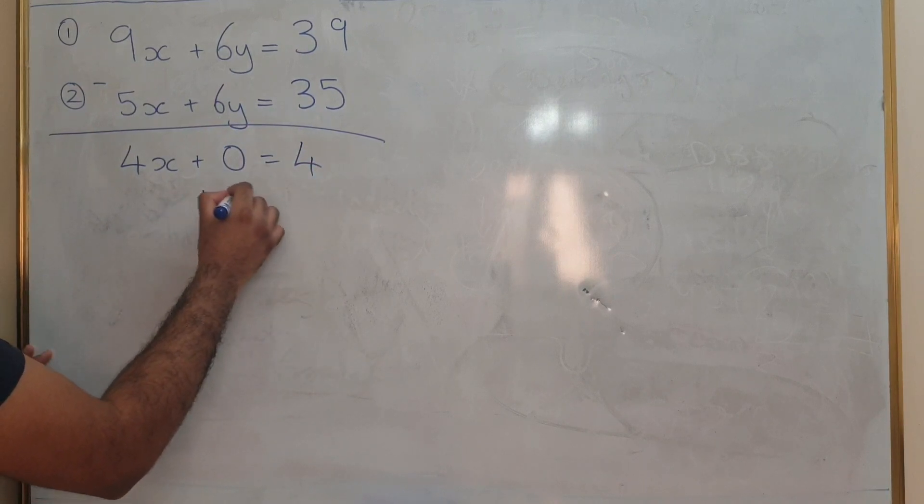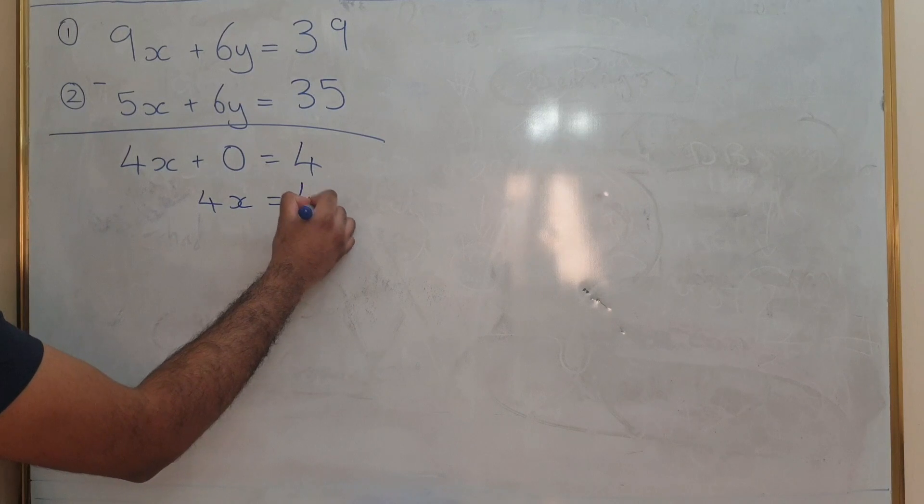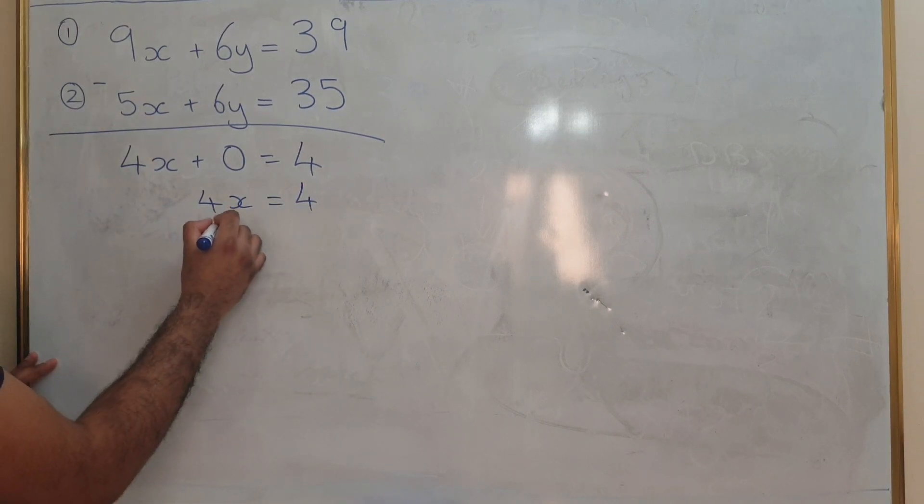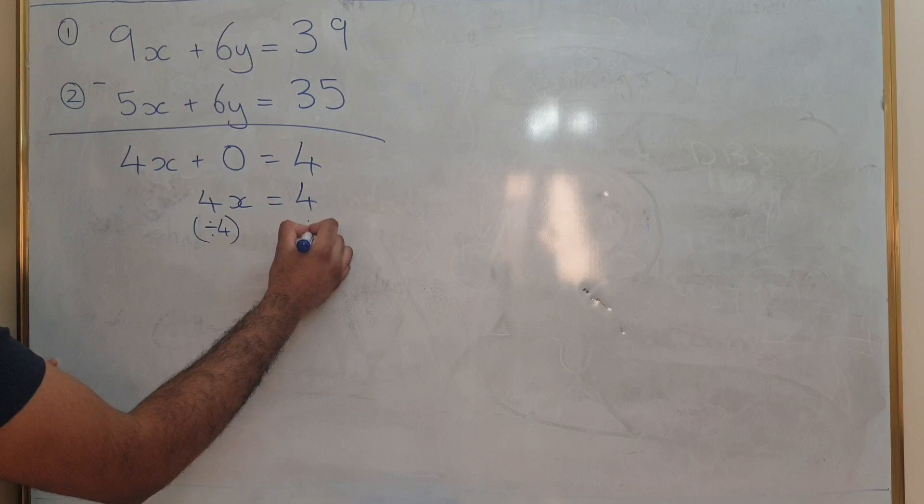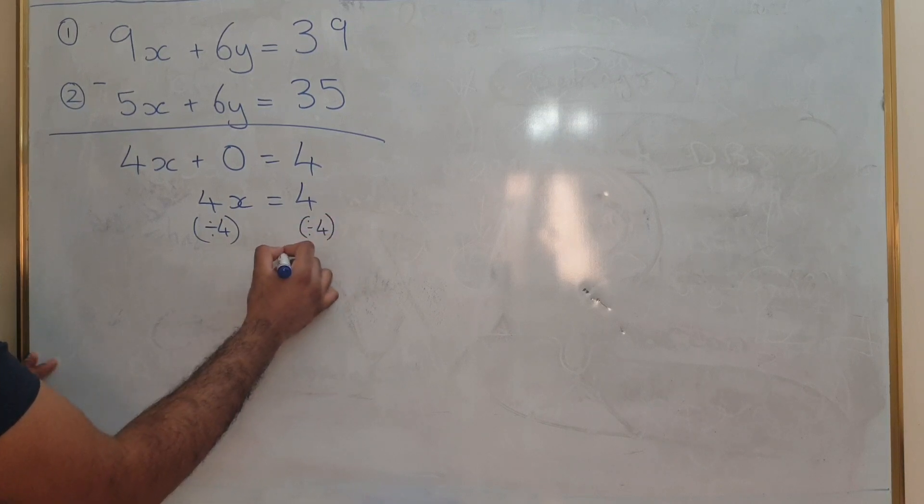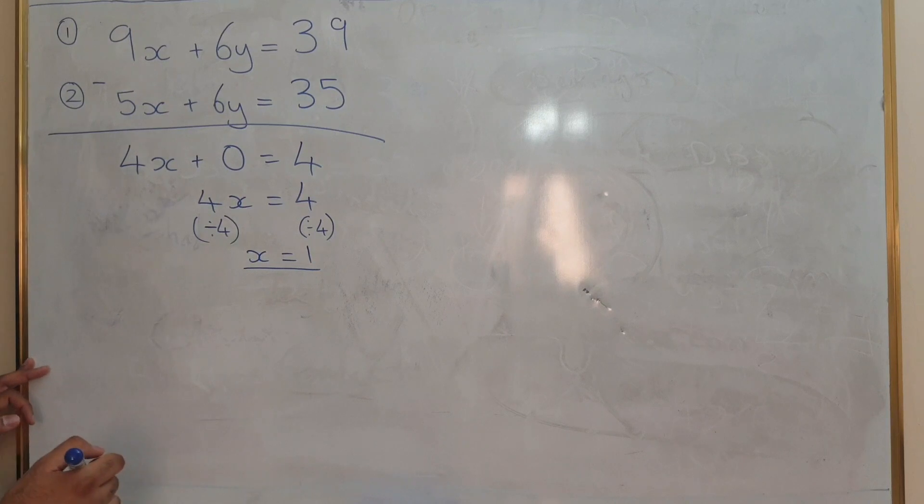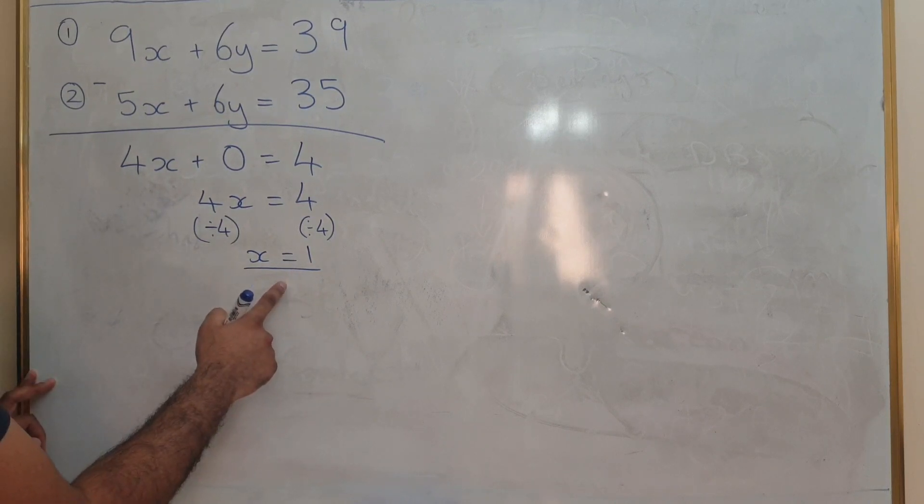So we have 4x equals 4. To find x we're going to divide by 4 on both sides which leaves x equals 1. So we have an answer of x equals 1.